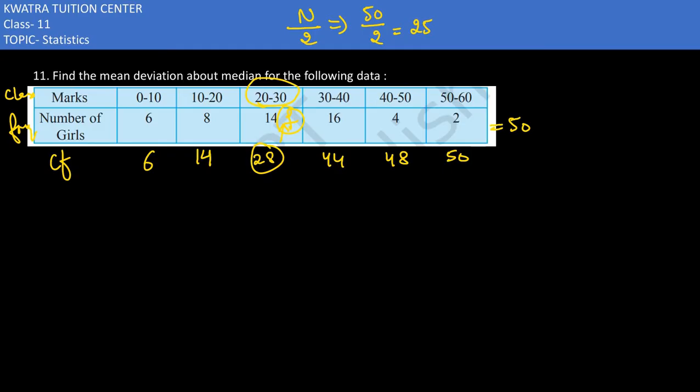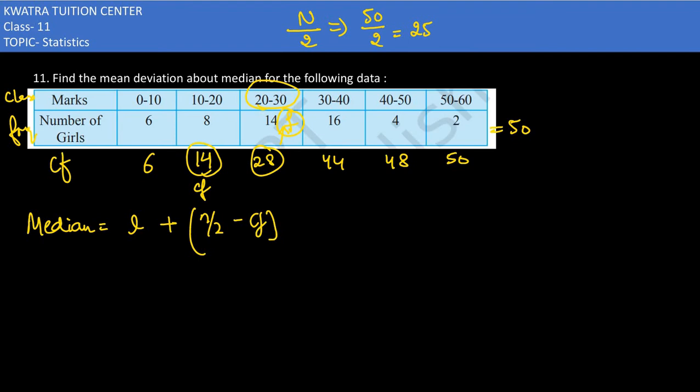28 ke saamne you would get the frequency 14. And your median class would be 20-30, and your cumulative frequency considered in this is less than that, that would be 14. CF is this one, and f is the frequency here in this case is 14.